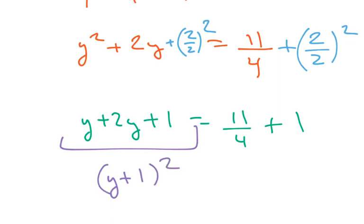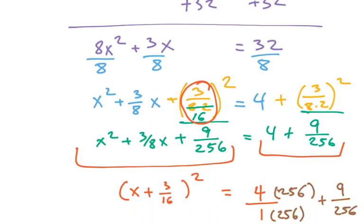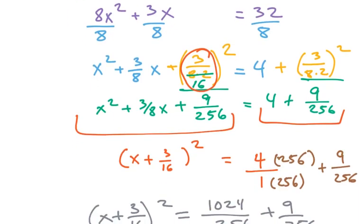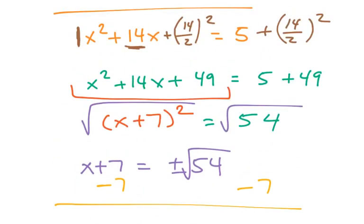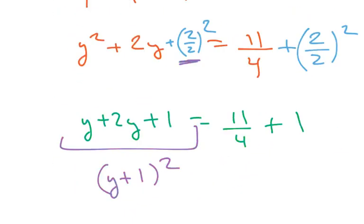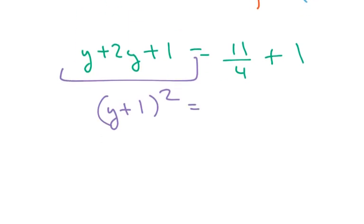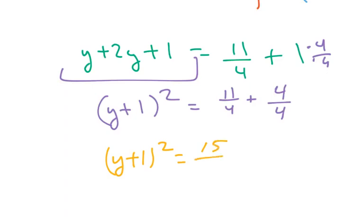We're going to take y squared plus 2y plus 1 and rewrite this as y plus 1 squared. We take this 2 and divide by 2, we get 1 — that's the value inside the squared term, just like when 14 was divided by 2 we got 7. For the other side: 11 over 4 plus 1 — we convert 1 to 4 over 4 because we can't add fractions unless they have the same denominator. So this becomes y plus 1 squared equals 15 over 4.